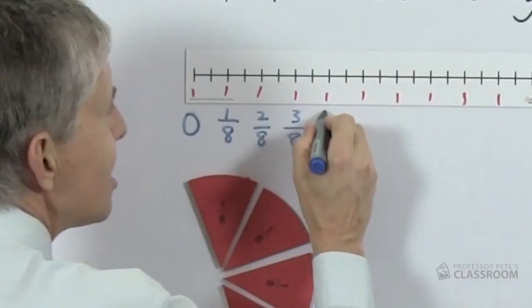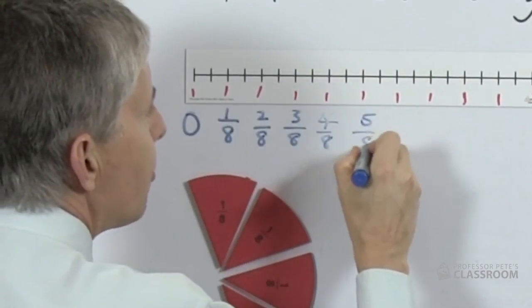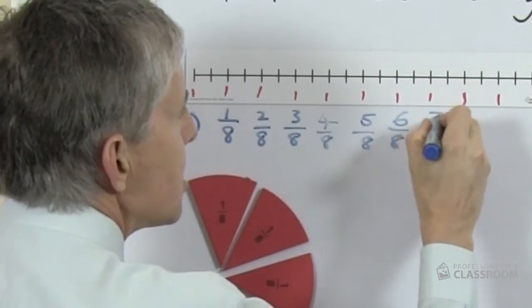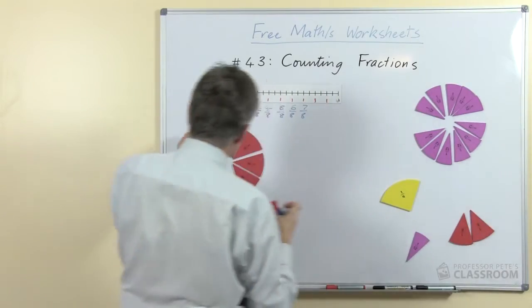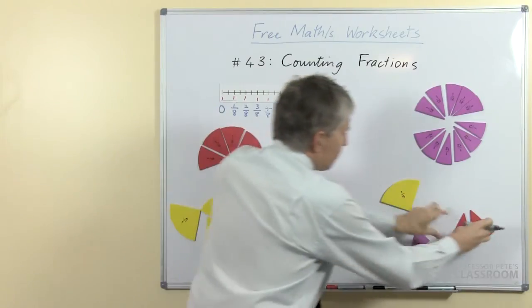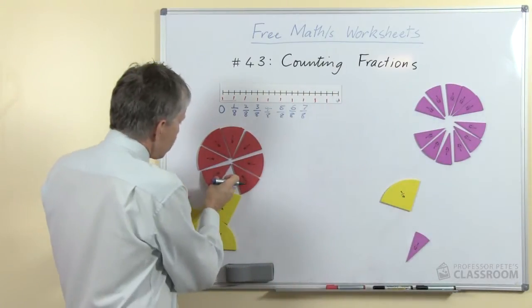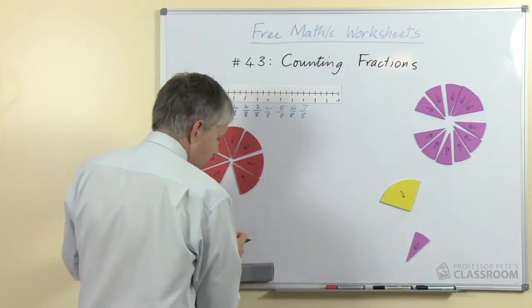And we just keep doing this and we keep adding pieces and we'll do five eighths, six eighths, seven eighths. What will happen when we get all eight of them? This of course is the interesting bit, it's also the tricky point in the process for the students.